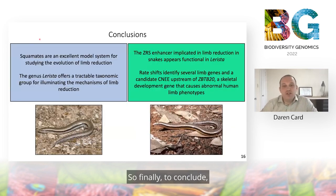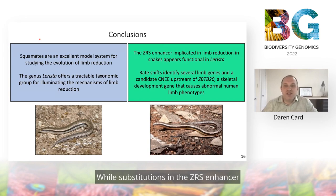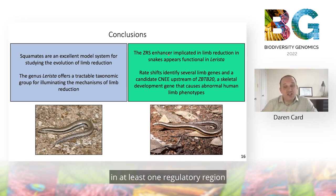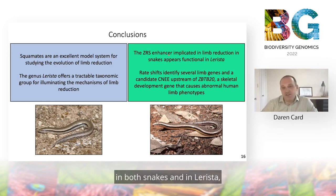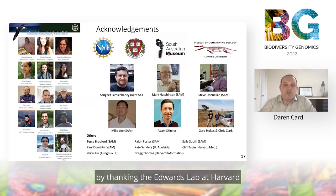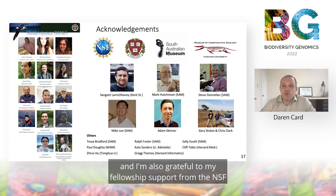To conclude, squamates and Larista specifically represent promising models for understanding the evolution of convergent limb reduction. While substitutions in the ZRS enhancer do not appear to be associated with limb reduction in Larista as they are in snakes, we identified other promising candidate genes and at least one regulatory region that may play a role in limb reduction in both snakes and Larista. I'd like to thank the Edwards Lab at Harvard, superb collaborators in Australia, and my fellowship support from the NSF as well as support from Harvard and the South Australian Museum.